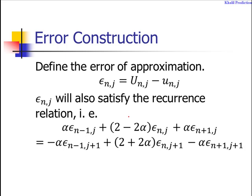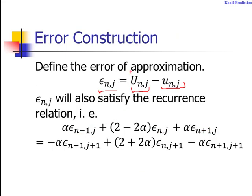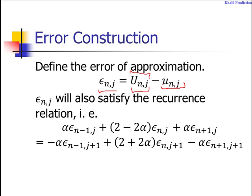We will check that the amplification factor of the error is decreasing and bounded. To do this stability analysis, define e_{n,j} as the error approximation between capital U and small u, where small u is the solution obtained by this reconciliation and capital U is the exact solution.